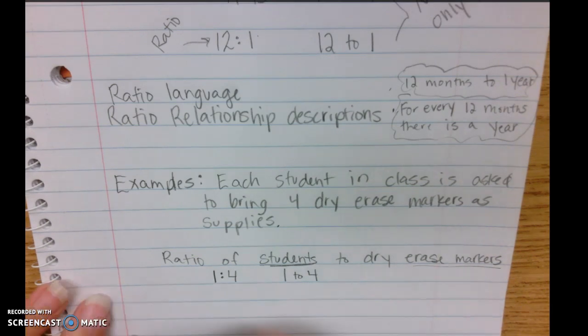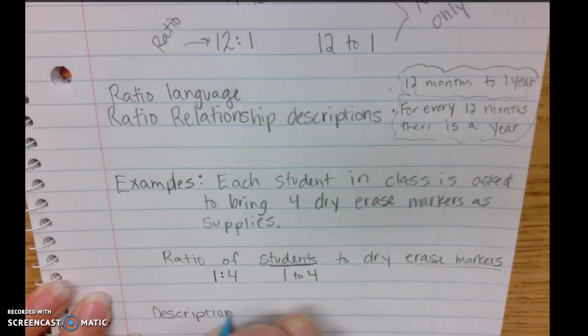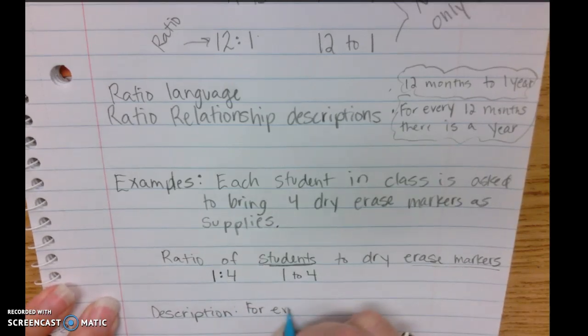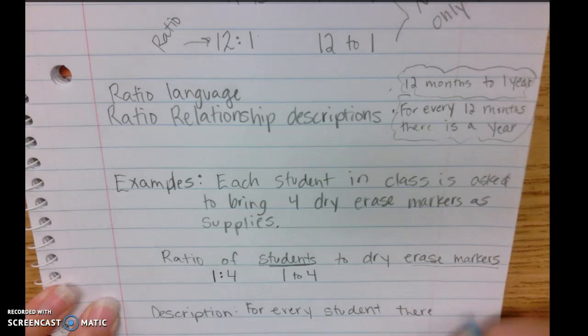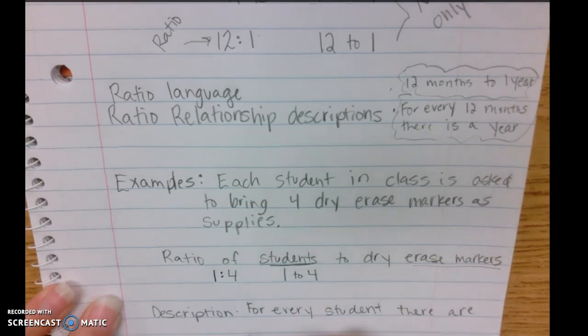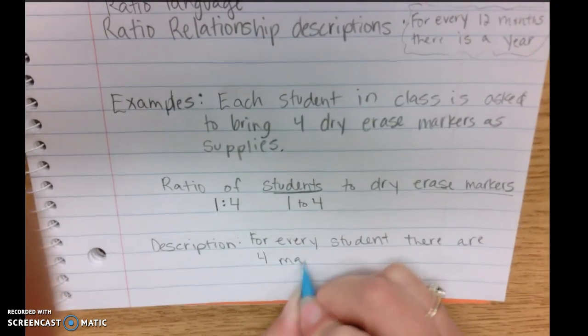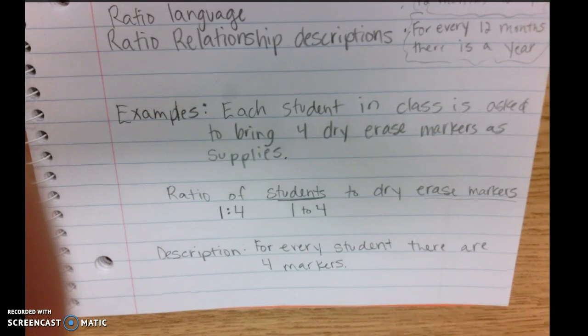If it said write a description from this ratio, I could write for every student there are four markers.